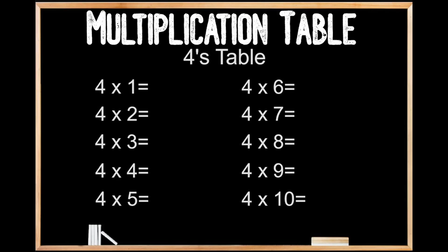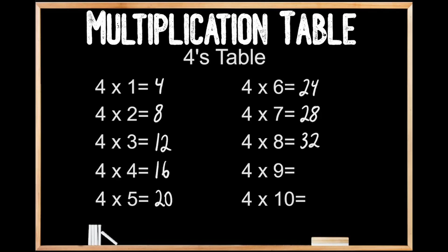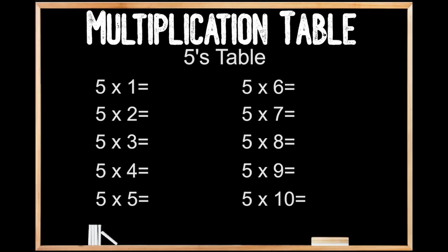4's table. 4 times 6 is 24. 4 times 7 is 28. 4 times 8 is 32. 4 times 9 is 36. And 4 times 10 is 40.